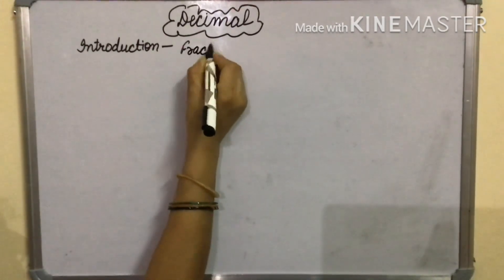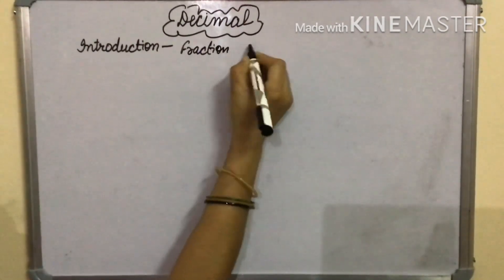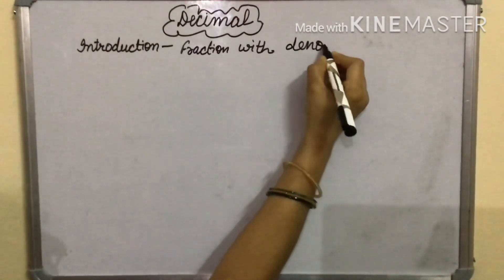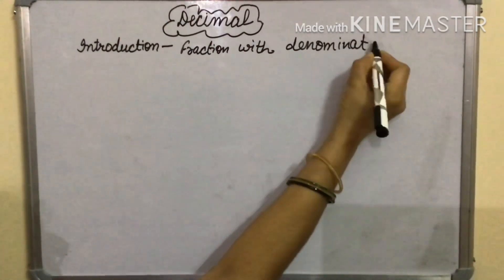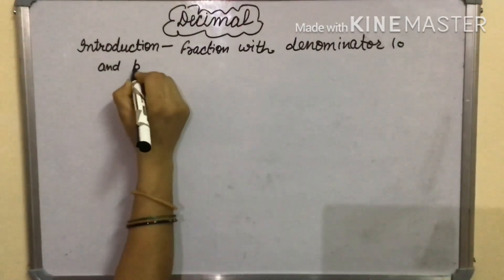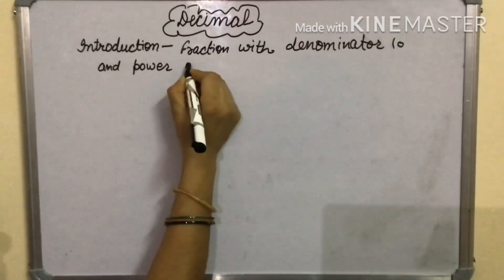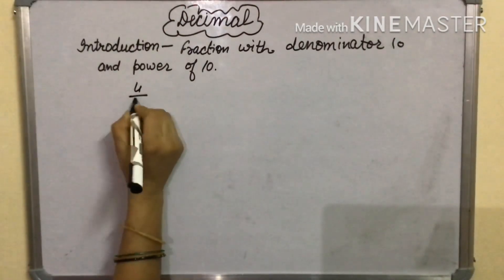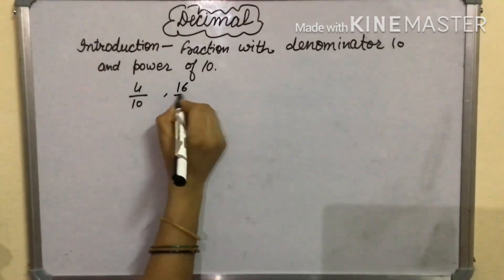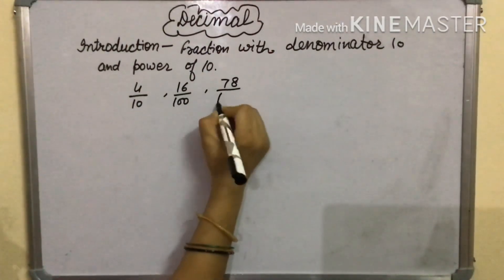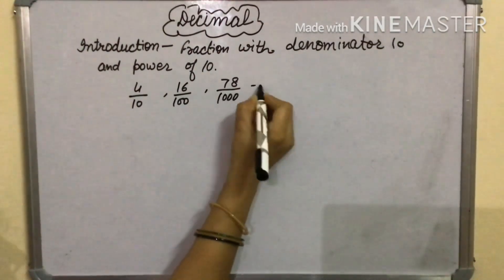Fraction with denominator 10 and power of 10 is known as decimal. Like 4 by 10, 16 by 100, 78 by 1000 and so on.